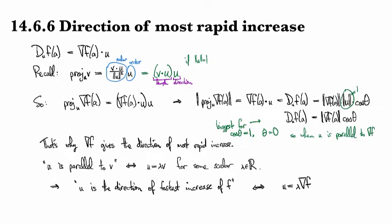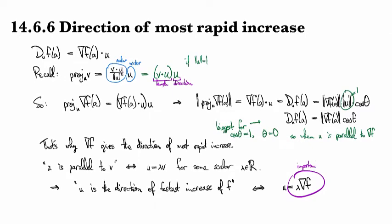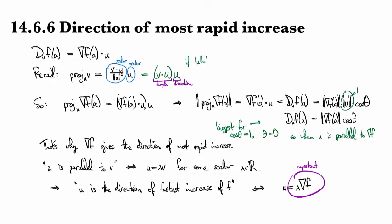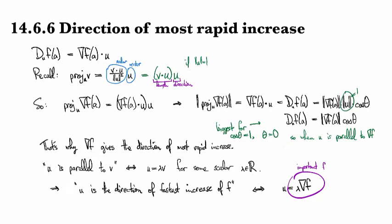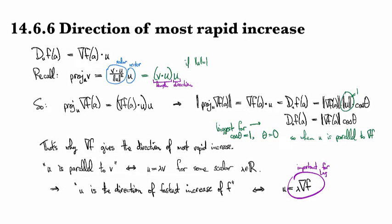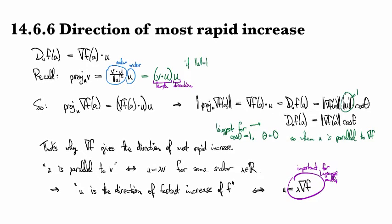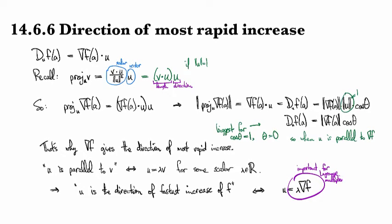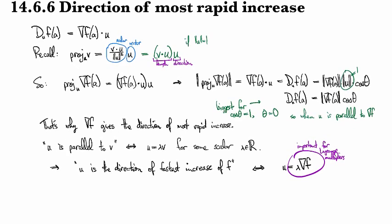And from that, we see that the phrase u is the direction of fastest increase of f, this means that u looks like a scalar multiple of the gradient. Now, this is going to be super important in, which section? Not the next section, but I think the one after. Lagrange multipliers.